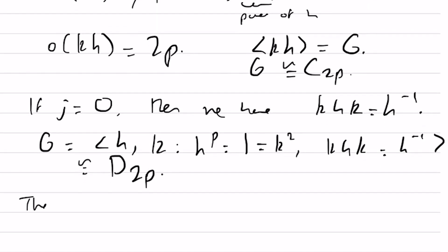Therefore, groups of order 2p are isomorphic to the cyclic group or the dihedral group of that order.